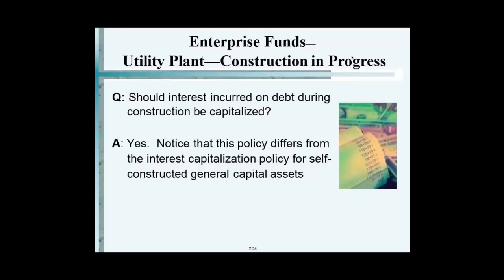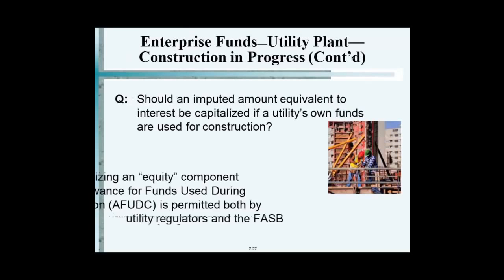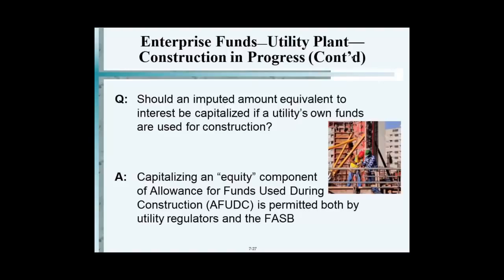The next item is construction in progress. Interest is capitalized during construction of utility assets. This is different from a capital projects fund, where we never capitalize interest. But for utilities it's different — interest is capitalized during construction. So if PSE&G is building a plant, any interest incurred is capitalized as part of the asset during construction.